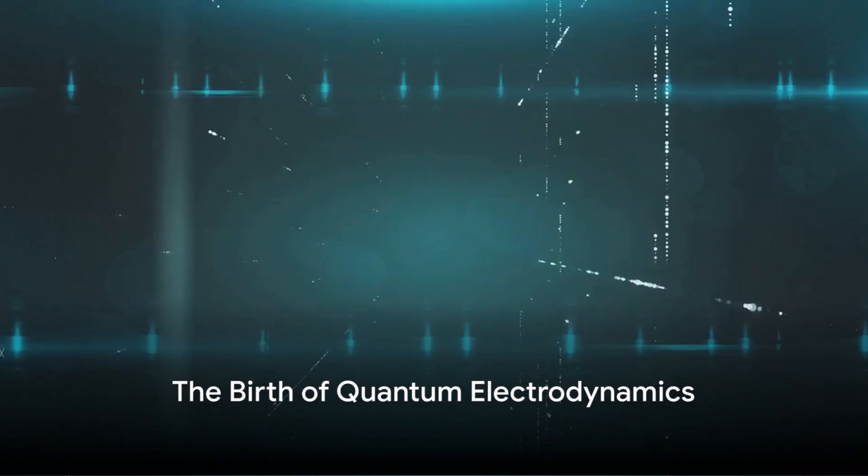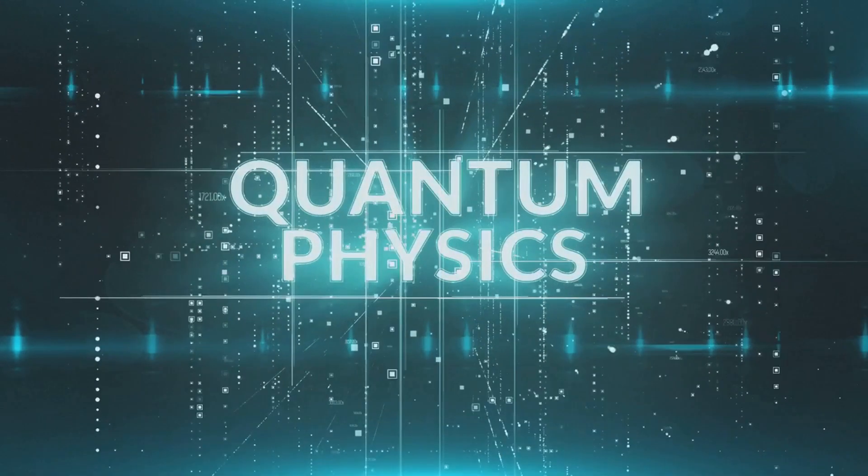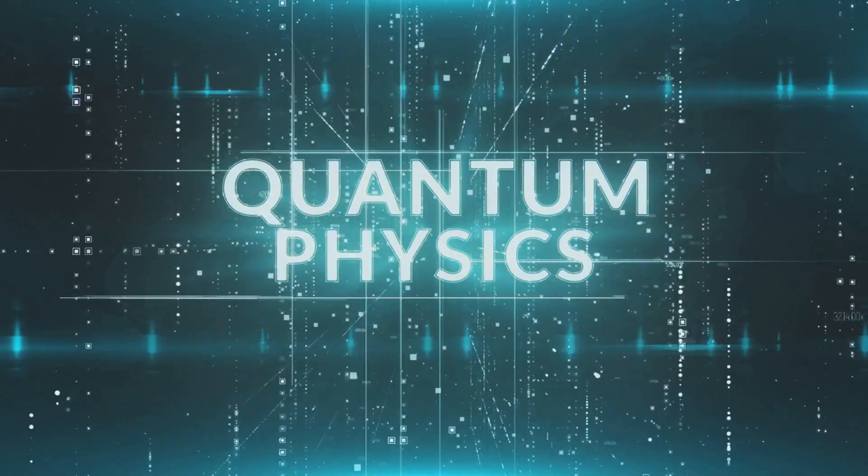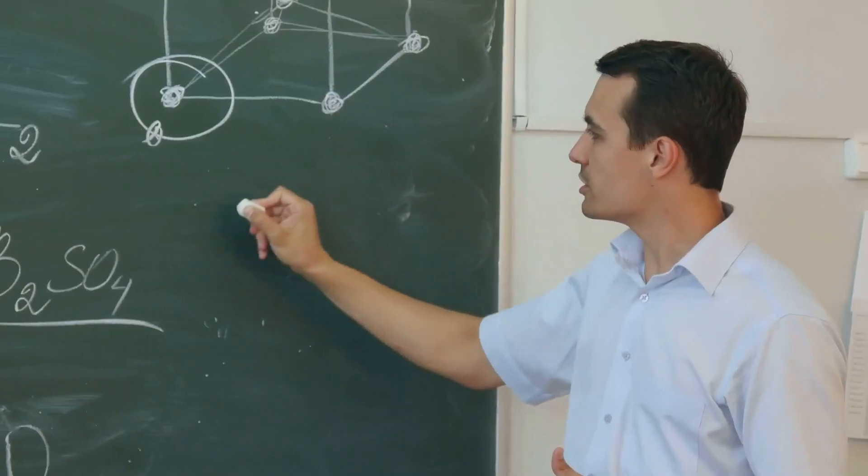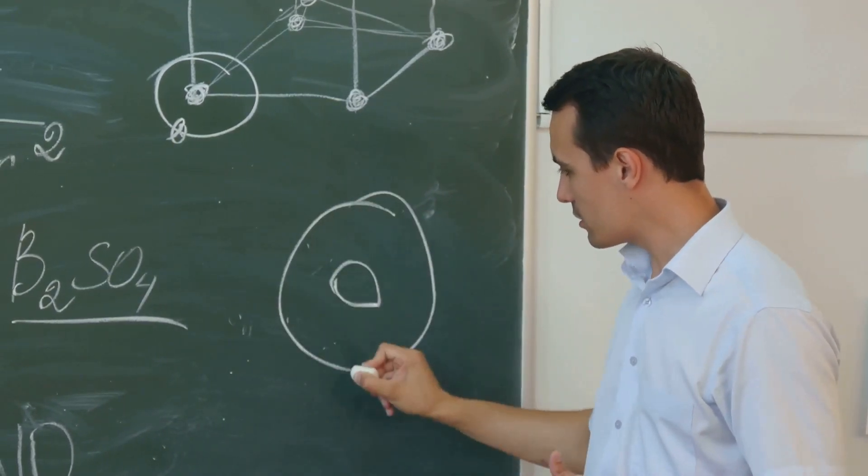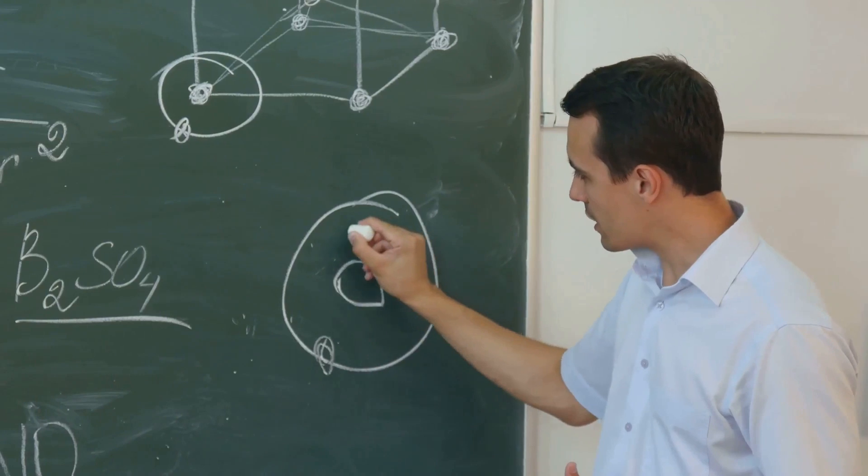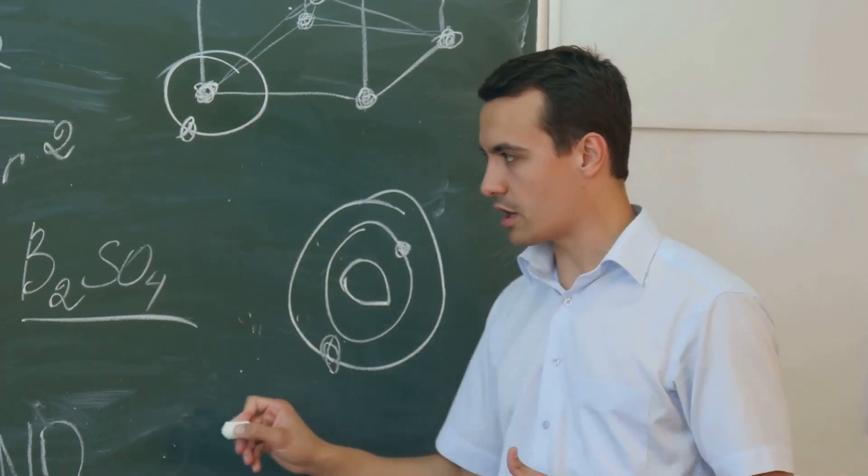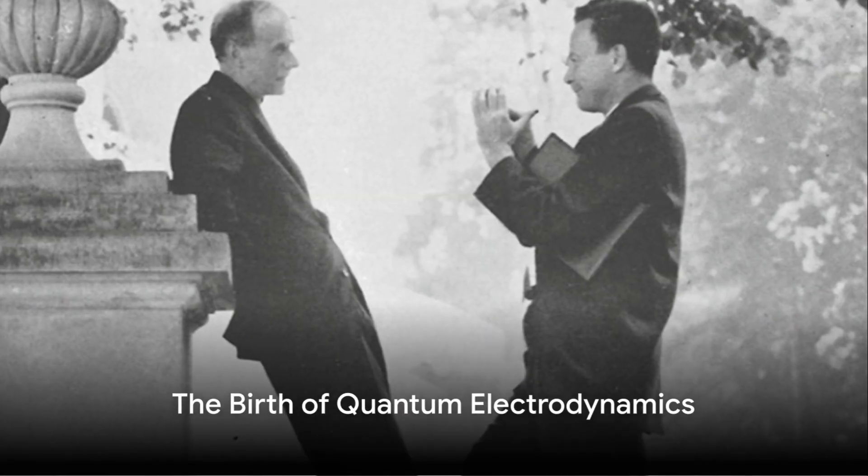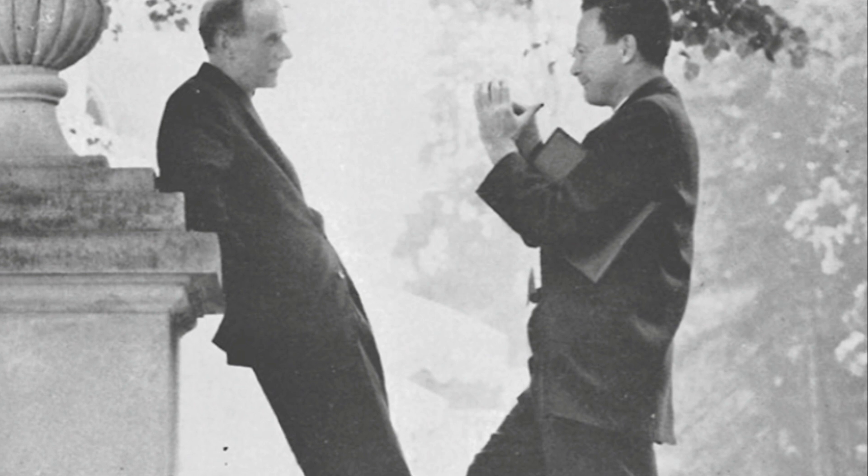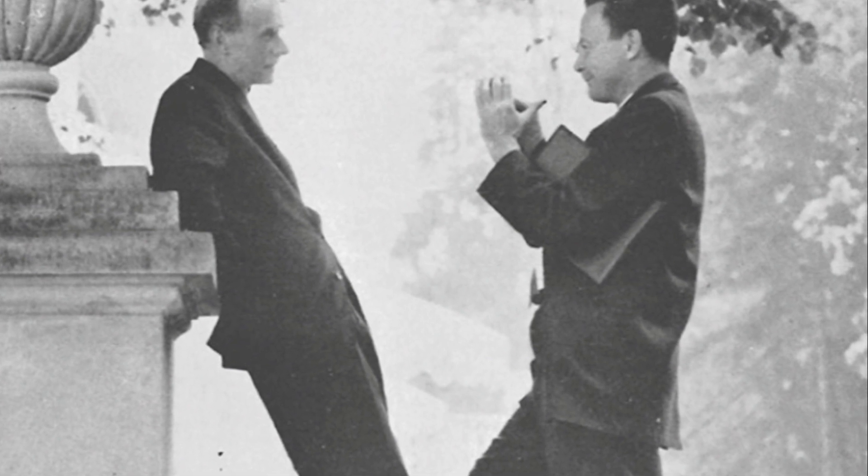A transformative period unfolded in theoretical physics during the 1940s and 1950s, highlighted by the birth of quantum electrodynamics, or QED for short. This groundbreaking theory, which explains the electromagnetic force between charged particles, emerged from the unique contributions of Richard Feynman, Julian Schwinger, and Tomonaga Sinichiro. It didn't just unify our understanding of charged particle behavior and light, but also laid the bedrock for modern quantum field theory.